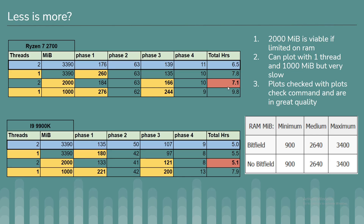What's interesting is that if I lowered RAM to 2000 MB, the time difference is not huge — especially on the 9900k, it's only off by 0.1. So you could really get away with a lot less RAM. Depending on your processor, you might not need to go out and get more RAM to do more parallel plots — you might be able to get away with what you already have in the system.